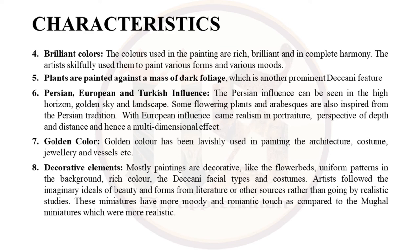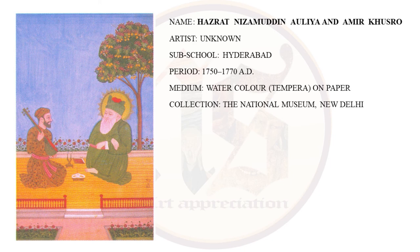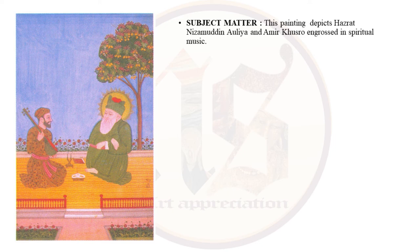Now we come to the two paintings which are part of our syllabus. First is Hazrat Nizamuddin Aulia and Amir Khusro — artist unknown, sub-school Hyderabad, period 1750 to 1770, medium watercolor (tempera on paper), collection National Museum, New Delhi. They are both engrossed in spiritual music. Khusro was a great musician and Nizamuddin Aulia was his spiritual mentor. They had a very deep devotional relationship, also called Peer and Murid relationship, which is a unique part of Sufi philosophy.